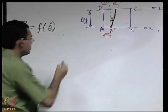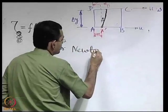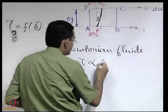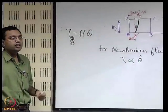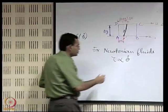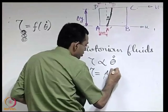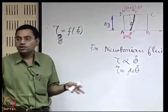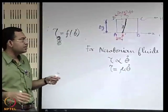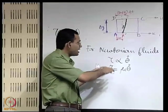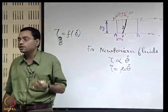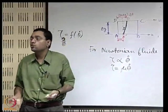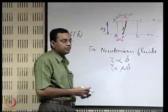For Newtonian fluids, tau is proportional to theta-dot. This proportionality is expressed as an equality through the fluid property mu, called the viscosity of the fluid: tau = mu · (du/dy). This is the formal definition of viscosity — valid only for Newtonian fluids. For non-Newtonian fluids this definition does not strictly apply; one may cast the relationship in a pseudo form giving an apparent viscosity, but true viscosity follows Newton's law. Fluids that do not obey Newton's law of viscosity are called non-Newtonian fluids.